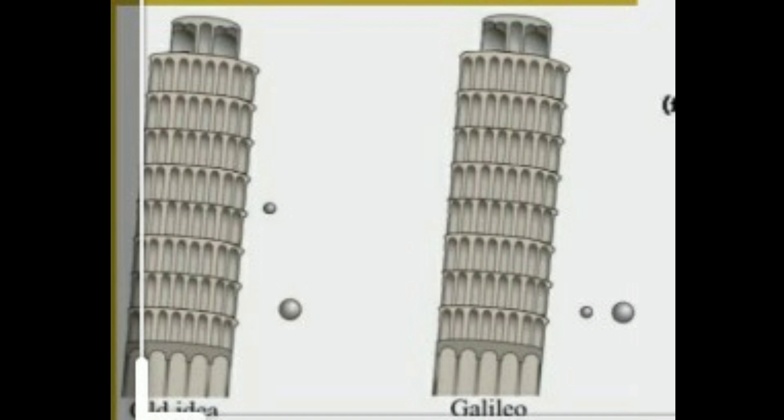We know that an object experiences acceleration during free fall. The acceleration experienced by an object is independent of mass. This means that all objects — hollow or solid, big or small — should fall at the same rate.